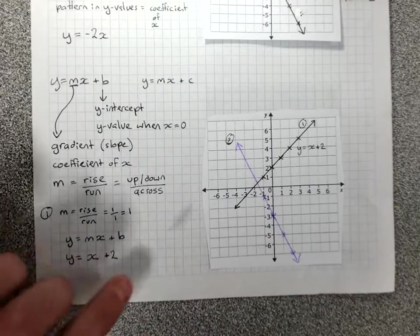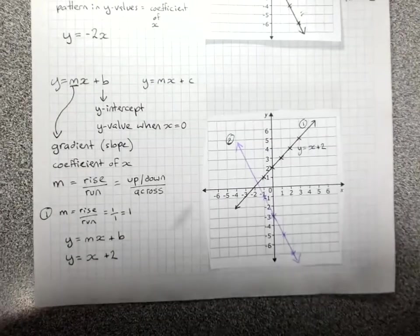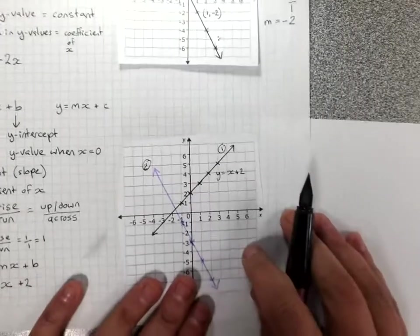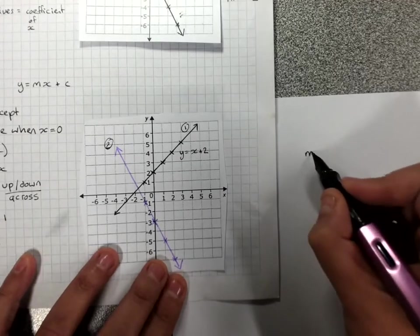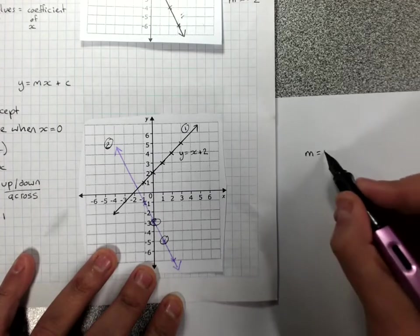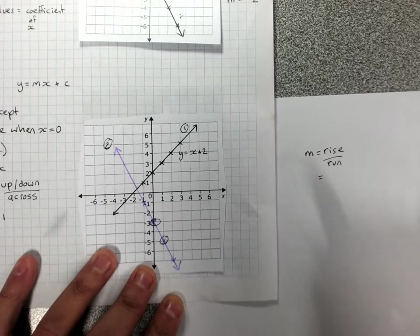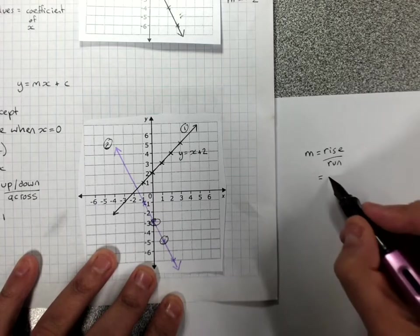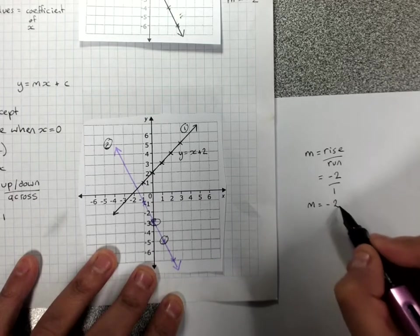I'm running out of space for this next line here. I might just get some extra paper in here. So this line here, find the gradient from two points. Let's use that one and that one. Rise over run. How much did it go up or down? It went down 2. It went across 1. My gradient here, again, is negative 2.